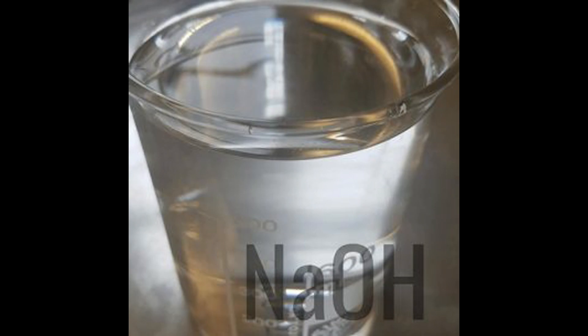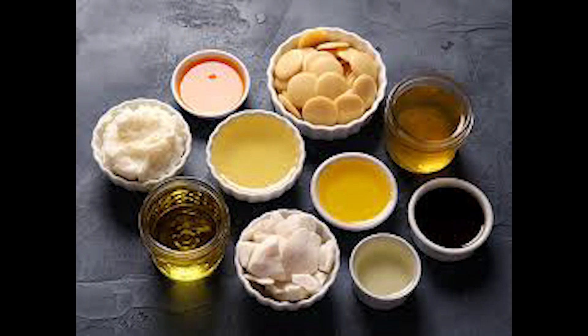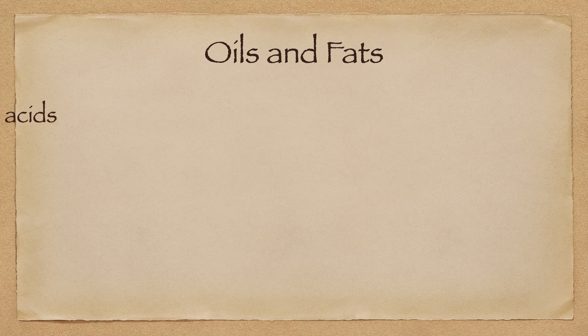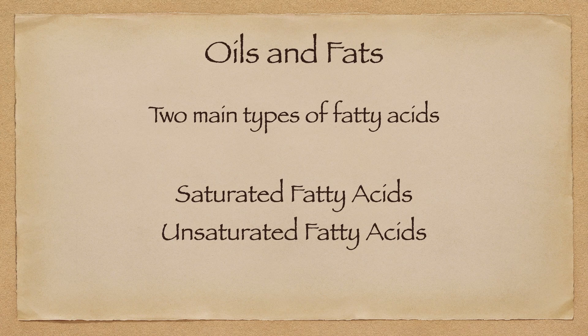Let's first go over the oils and fats. This is the most interesting part of any soap recipe, as different fats and oils in the soap making process will allow us to bring different properties to the bars we're making. Each oil has a different property, and that allows us to have a bar that's more conditioning or less conditioning. There are two main types of fatty acids: saturated and unsaturated fatty acids.